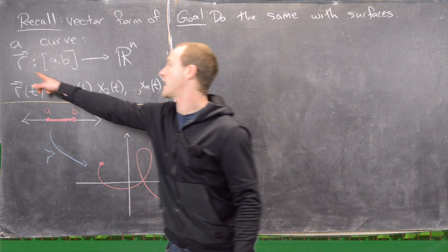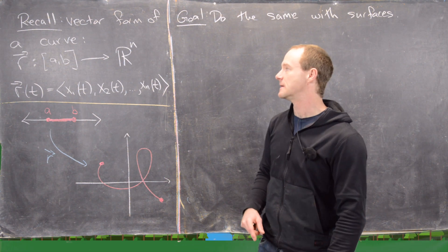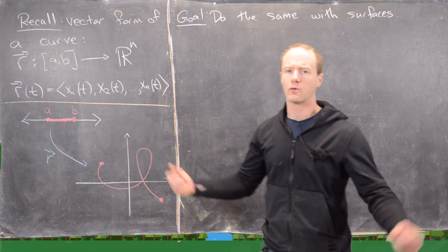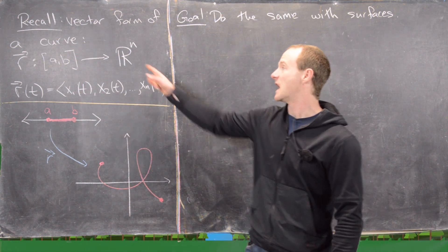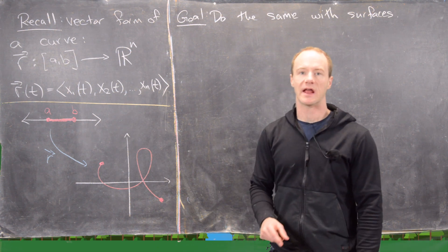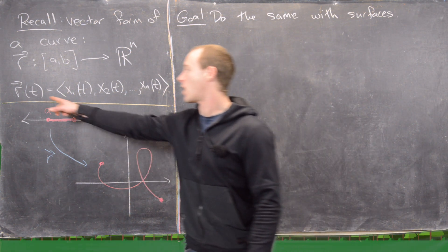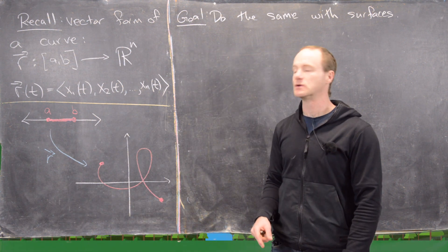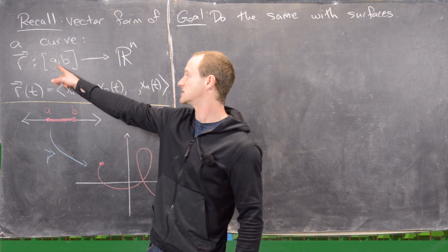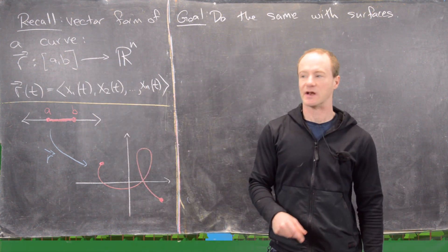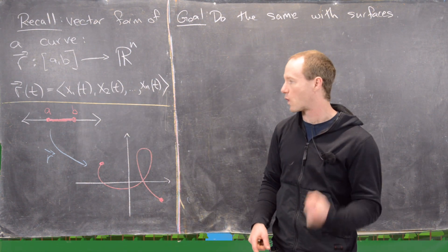It goes like this. We have r, and its domain is this interval a to b, and that could be the whole real line. Obviously, maybe you'd have parentheses there instead of brackets. And then that goes into R^n, and usually we're looking at R^2 or R^3. And r has these component functions x1, x2, all the way up to xn, but it only has one variable, and that's t, and that's because we only have one possibility for an input because our domain is a subset of the real numbers, which is one-dimensional.